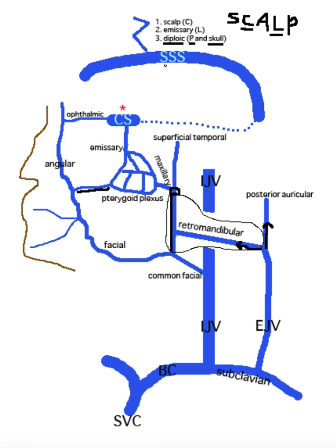This will eventually reach the superior sagittal sinus. Once there, it can take any number of paths to get to the cavernous sinus. It could go through the occipital sinus around the foramen magnum, then up the basilar sinus to reach the cavernous sinus.